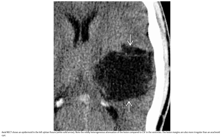Axial non-contrast CT showing an epidermoid in the left sylvian fissure. Note the mildly heterogeneous attenuation of the lesion compared to CSF in the ventricle. The lesion margins are also more irregular than an arachnoid cyst.